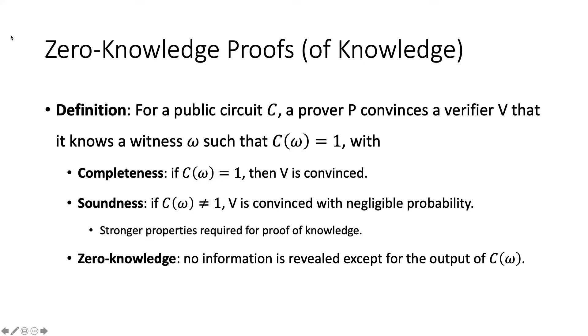What is a zero-knowledge proof? A simple definition is like this. There are two parties, a prover and a verifier. For a public circuit C known by both parties, a prover P convinces the verifier V that it knows the witness W such that C of W equals 1, with three properties: completeness, soundness, and zero-knowledge.